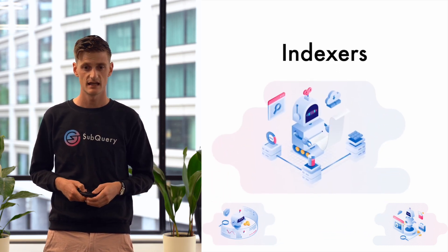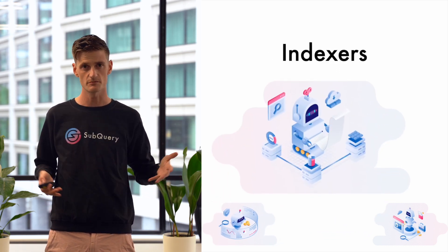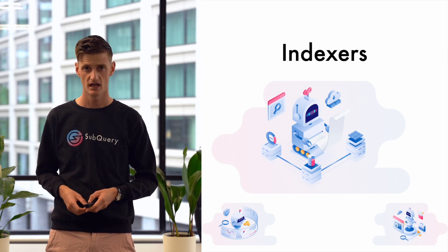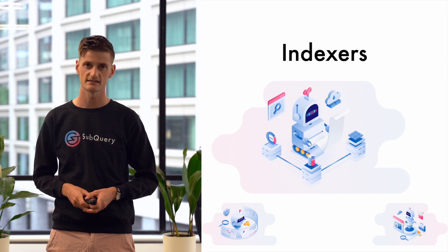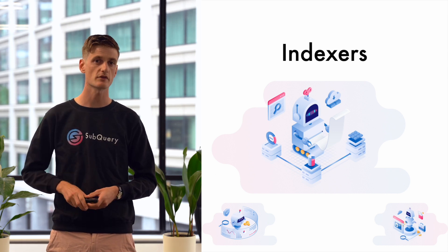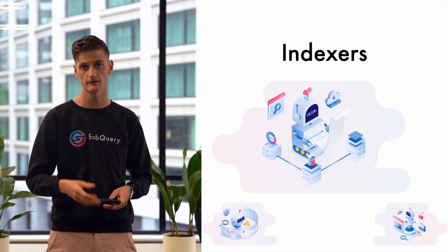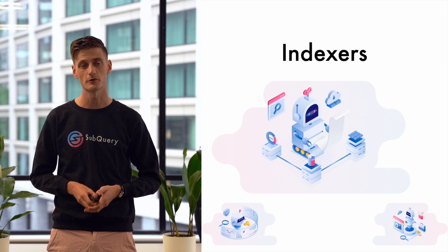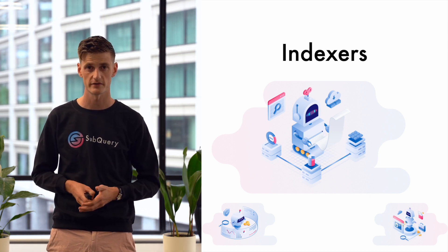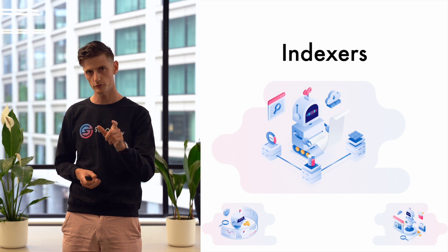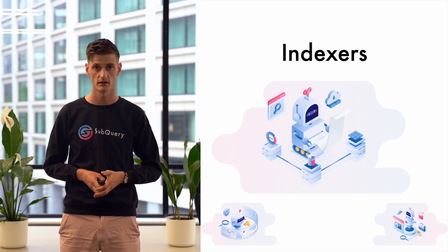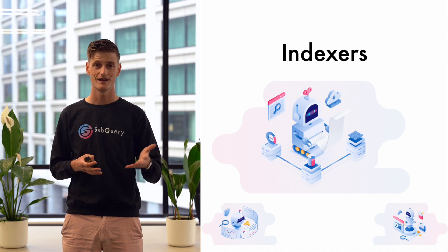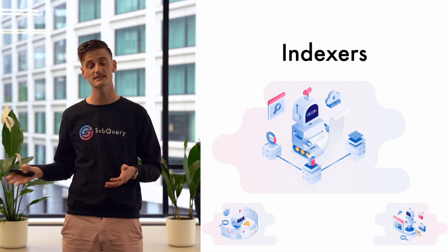Consumers mostly work with indexers. Indexers are the engine behind the subquery network. They're highly technical users that know exactly how it works — they find a new project to index and work behind the scenes to do all the hard work of indexing data from the blockchain for that subquery project, preparing it into a state where it can be passed on to consumers within the network. The subquery tokens that consumers award indexers with are distributed to indexers based on the work they do and the amount of subquery tokens they themselves have staked.